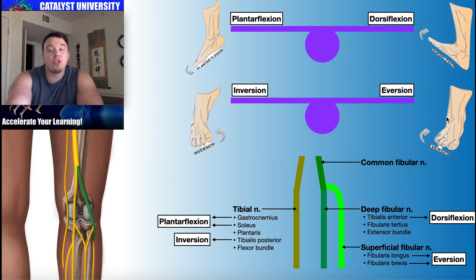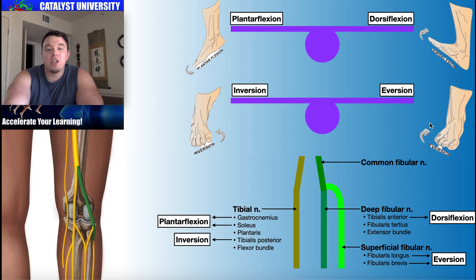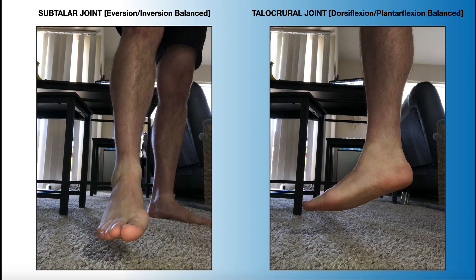Plantar flexion is antagonistic to dorsiflexion, and inversion is opposite to eversion. When everything is working normally, these actions should be balanced. If you take your foot off the ground and hold it without biasing any muscles, inversion and eversion should be relatively balanced — your inverters counteract your evertors. Similarly, at the talocrural joint, dorsiflexion and plantar flexion should be balanced looking from the side. Technically, you will have a little more plantar flexion than dorsiflexion — that is the resting position of the ankle.